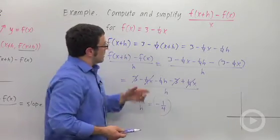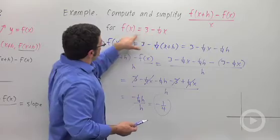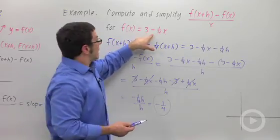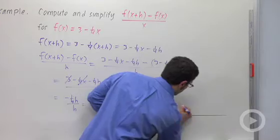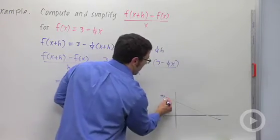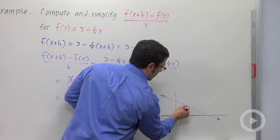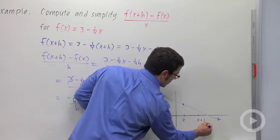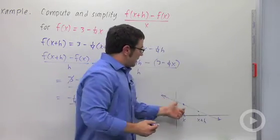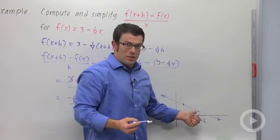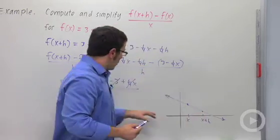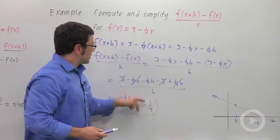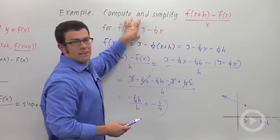Well, what does that represent? Remember, this is going to be a line: 3 minus 1 quarter x, a line. It might look something like this. No matter what values you pick for your x and your x plus h, the slope of this line is always going to be negative 1 quarter. So, you'll always get negative 1 quarter for a difference quotient that involves a linear function.